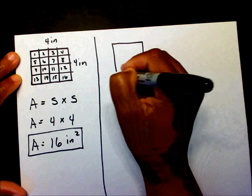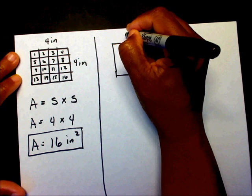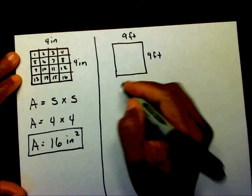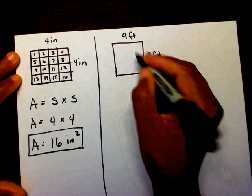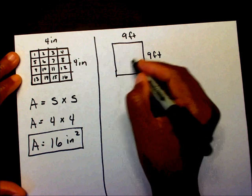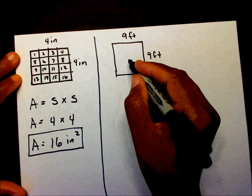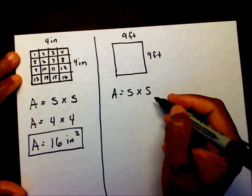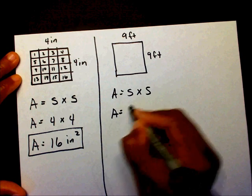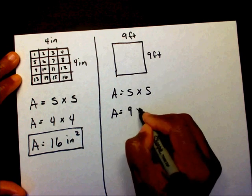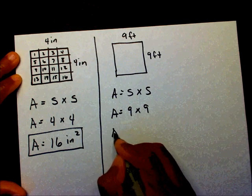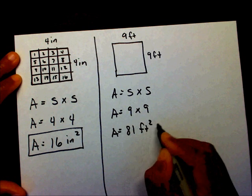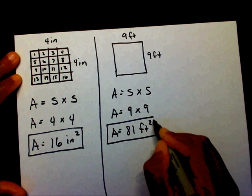Well, let's say I have a square of nine feet by nine feet. So instead of me making all these squares inside, or these different parts inside of my square, I'm going to write A equals s times s. So A equals, what is the length of the side? Nine. Nine times nine. Well, what is nine times nine? Nine times nine is eighty-one feet squared.